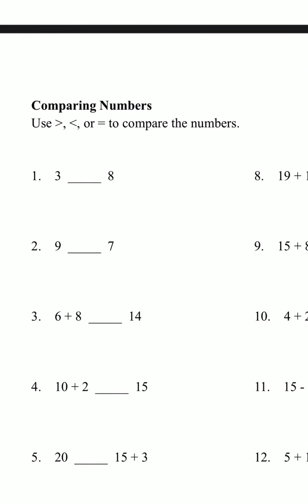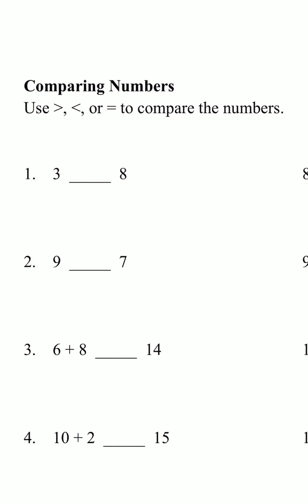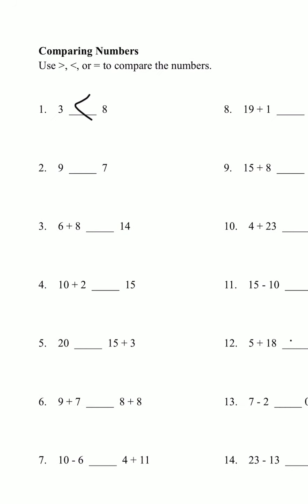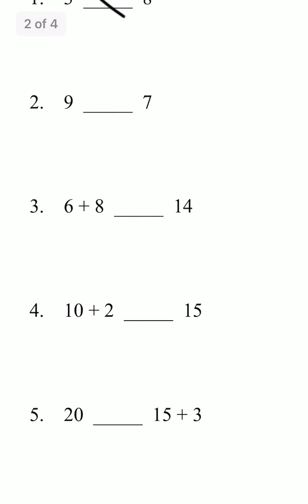Comparing numbers. Use greater than, less than, or equal to to compare the numbers. 3 and 8 — 3 is less than 8, so we're going to put 3 as less than 8. And then for number 3, we have 6 plus 8, blank, 14. So we're going to have to find which number is bigger, or if they are equal to each other. 6 plus 8 is 14, and here we have 14, so we would put equal to.